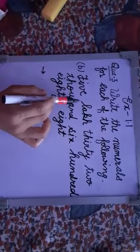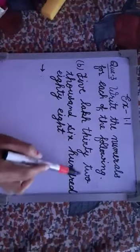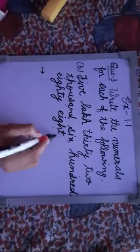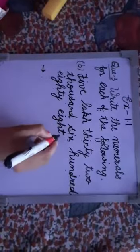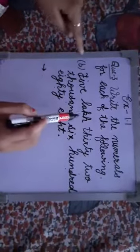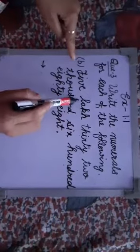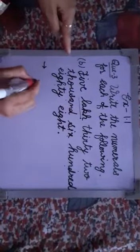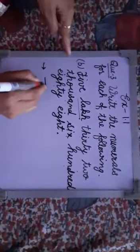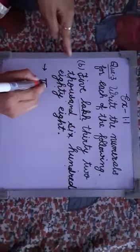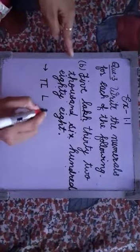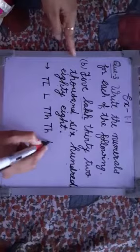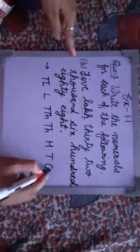Now the next part is 5,32,688. Write the numeral for the given number name. Firstly, we check the highest period. Here, the number starts from the lakhs period. So we write the places from the lakhs period: 10 lakh, lakh, 10,000, thousand, hundred, tens, and then ones.